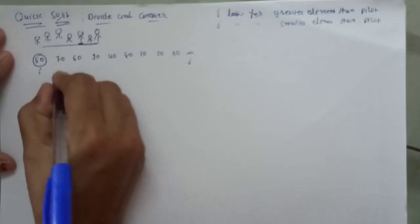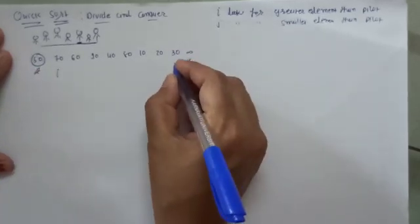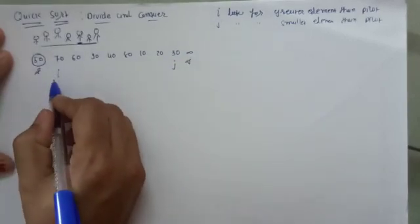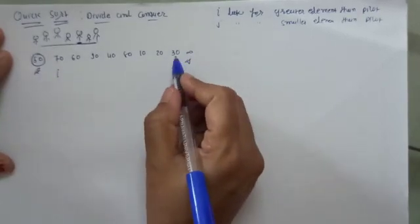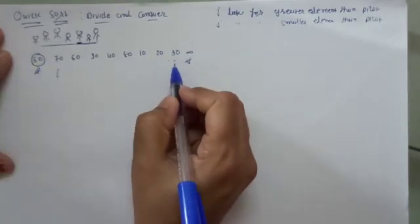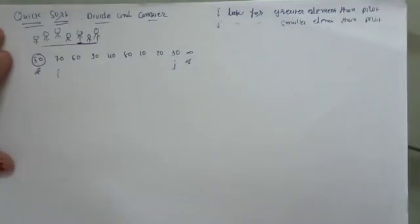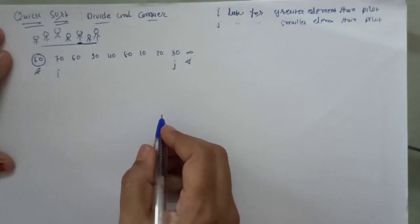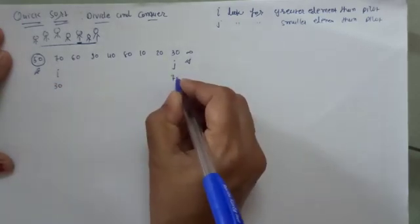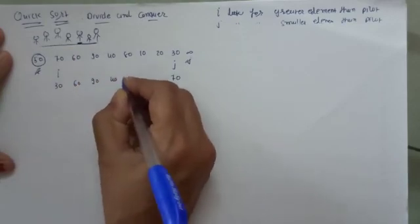We increment i — i is now pointing to 70. Since 70 is greater than 50, i stops here. j is pointing to 30, and since 30 is smaller than 50, j stops here. Now we exchange i and j: 30 comes to i's position and 70 goes to j's position. The other elements — 60, 90, 40, 80, 10, 20 — remain as they are, and 50 (the pivot) stays in place.